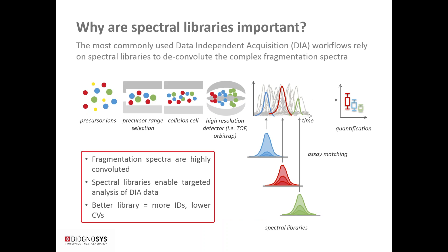Let's get started. Why are spectral libraries important? More and more people start to use data-independent acquisition strategies. Here, all peptides are systematically fragmented using wide mass isolation windows. The precursor range selection is typically wider than in other methods, for example in DDA, and this results in highly convoluted fragment ion spectra.